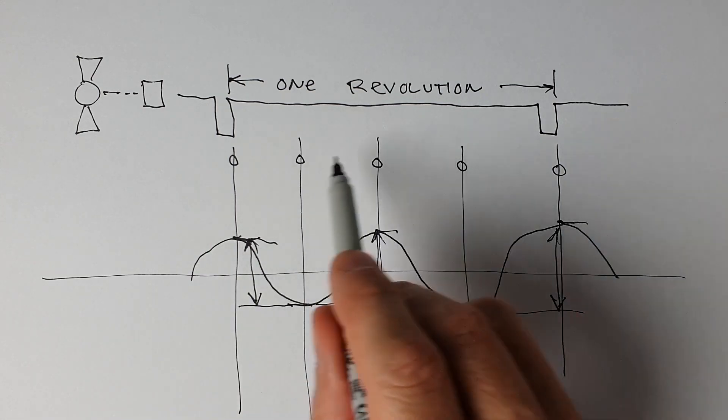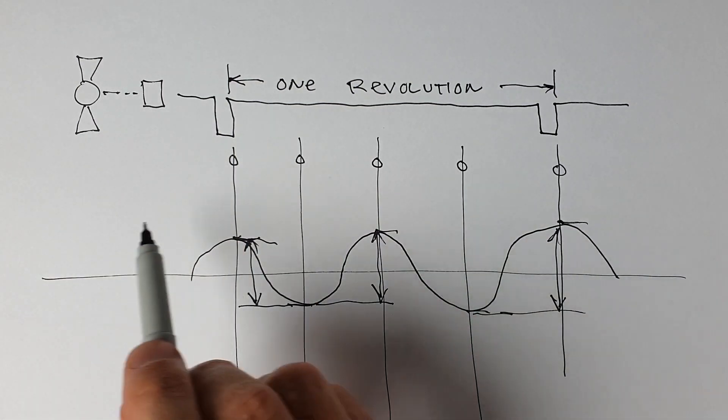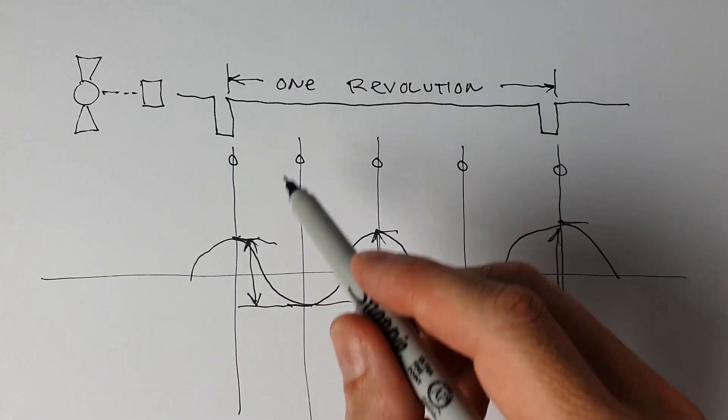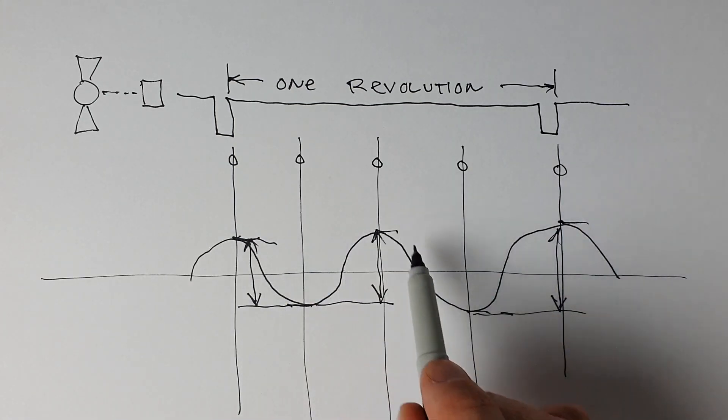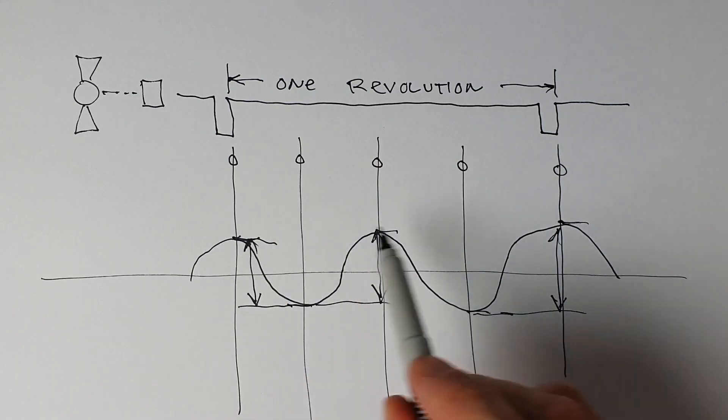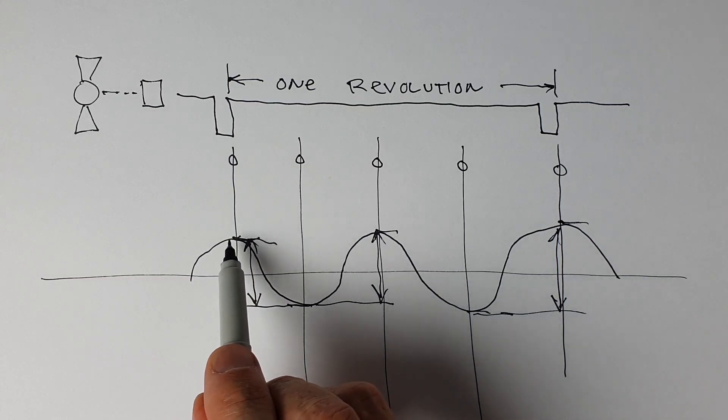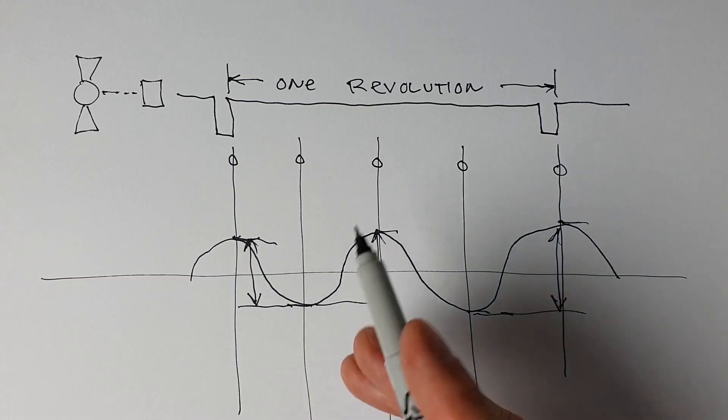And we're doing that synchronous with the revolution of the shutter and that gives us the ability to reject any noise that's not exactly synchronous with this process. So this is what you call synchronous demodulation. So we're taking an A to D reading at each one of these points.